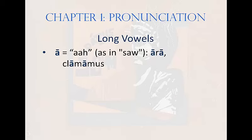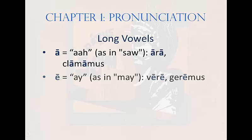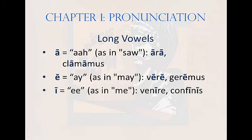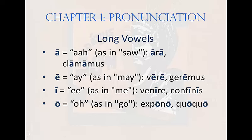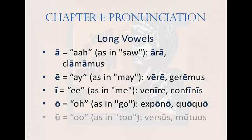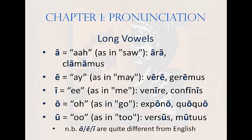The long vowels in Latin are as follows. A, as in 'ara' or 'clamamus.' E, as in 'vere' or 'geremus.' I, as in 'venire' or 'confinis.' O, as in 'expono' or 'quo quo' — yes, there's a Latin word 'quo quo.' And U, as in 'versus' or 'mutuus.' Note how different the first three are from their English counterparts. Latin long A is a lengthened version of the short vowel. Latin long E is pronounced like our long A. And the Romans pronounced their long I the way we pronounce our long E.